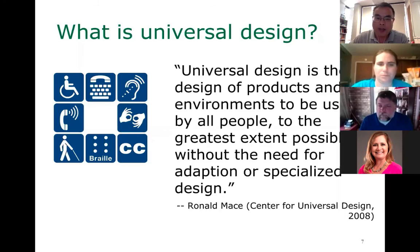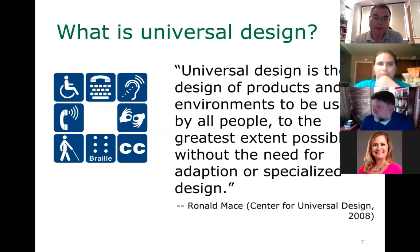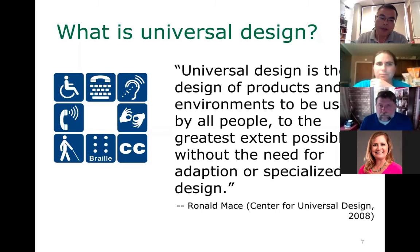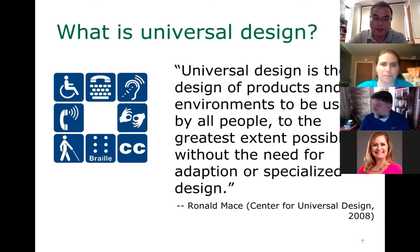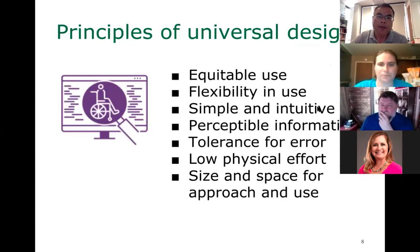Universal design means things are usable by all people to the greatest extent possible without the need for adaptation or specialized design. For instance, if you design a ramp accessibly, people with disabilities will appreciate it, but people without those needs may also appreciate it. When I go to a city with my son, he always talks about how accessible it is — because he uses scooters. Good design principles just make it easier for everybody.